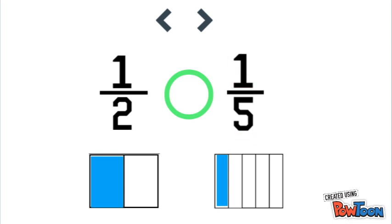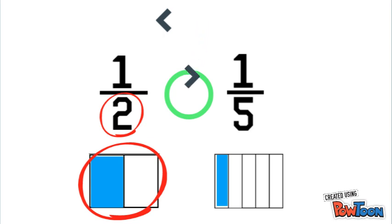Now notice, because one half is only split into two pieces, it has a greater amount shaded in than one fifth that was split into five pieces. So the symbol we'll use is the one that is chomping down on one half. We'll use this one. And we'll read this as one half is greater than one fifth.